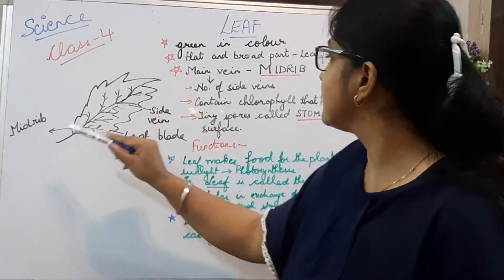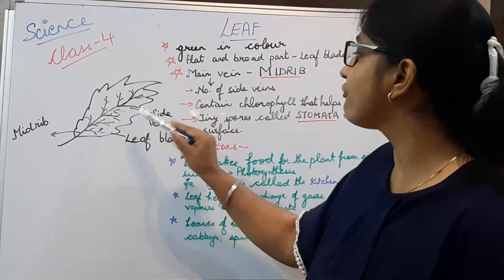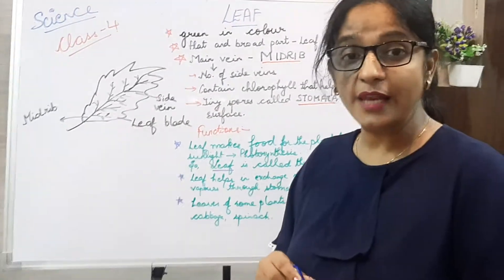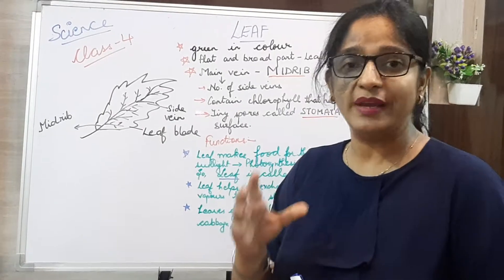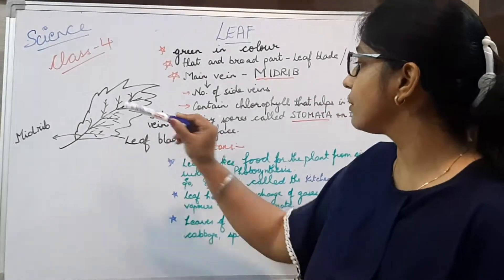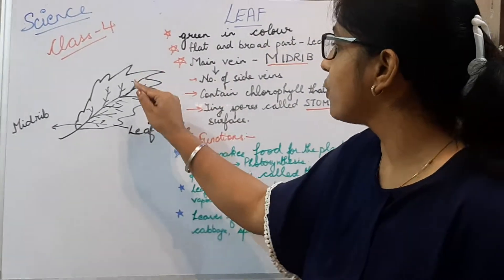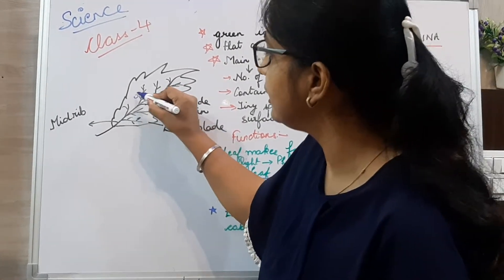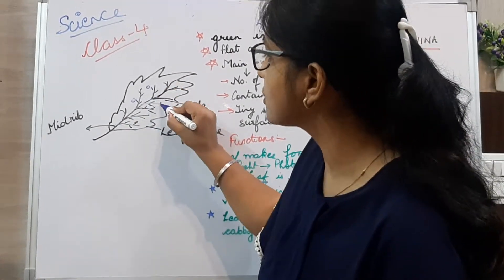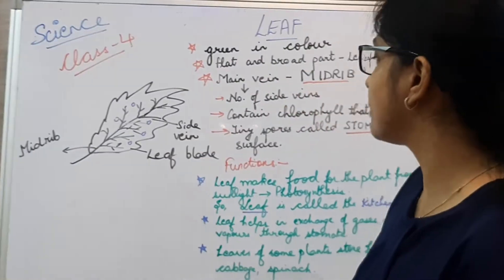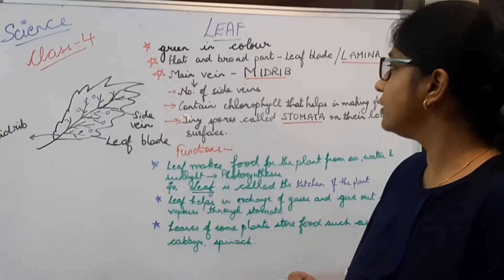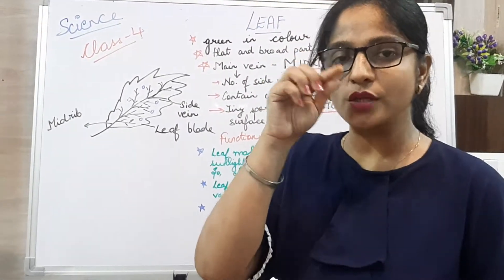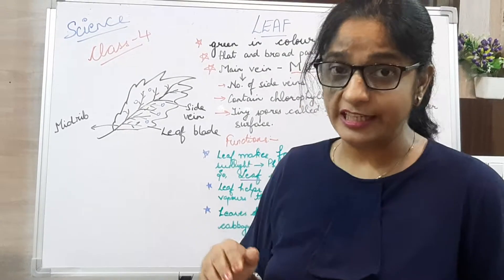These leaves contain chlorophyll that helps the plant to make food. Leaf has chlorophyll inside it. There are tiny pores on the surface of the leaf that are called stomata, found on the lower surface of the leaf. They are the tiny holes on the surface of the leaf.